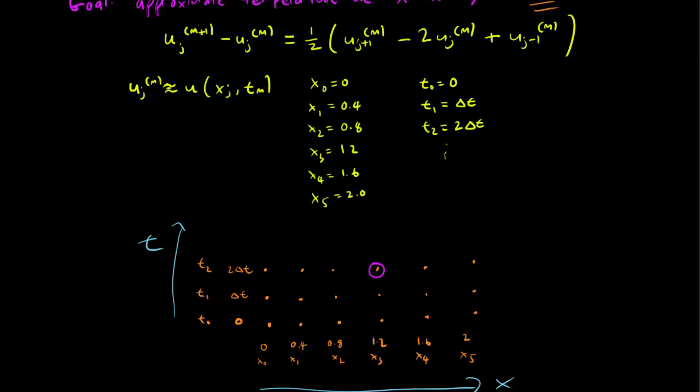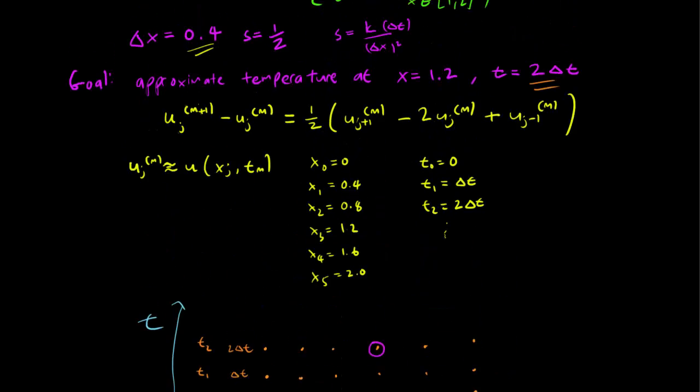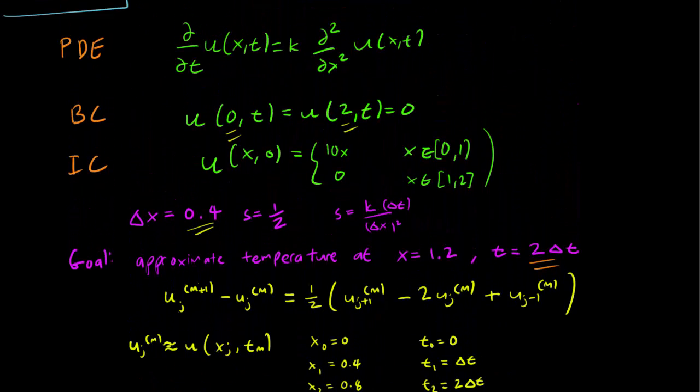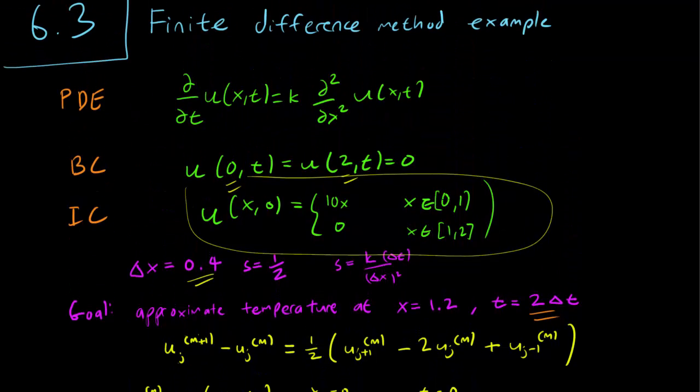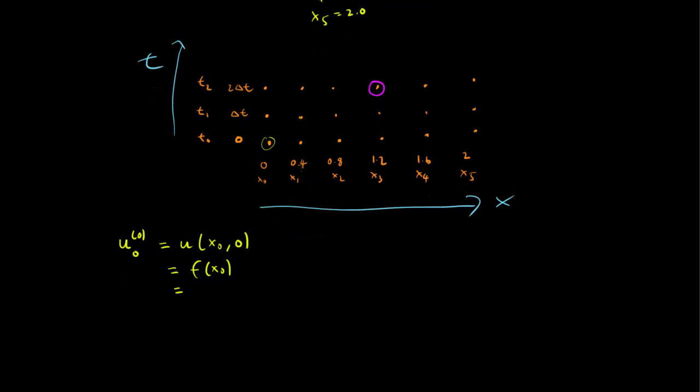So let's see what our initial conditions are first. So according to our initial conditions here, we have this function, u(x,0), which is 10x from 0 to 1 and 0 from x equals 1 to 2. So let's try it. Let's see what that looks like in our case. So we need to figure out what happens at u_0^0, so at this point here, time 0. That's going to be equal to u of x_0 at time 0, which is 0, which is equal to f of x_0, which is equal to, since we are at between 0 and 1, it's equal to 10x. So that's just going to be 10x_0, but x_0 is just 0, so 10 times 0 equals 0, so u_0^0 is 0.